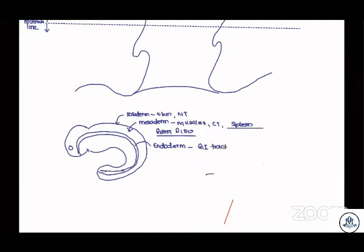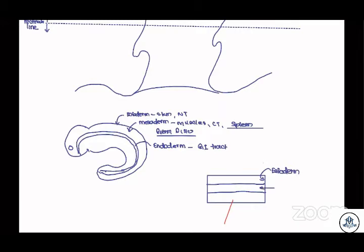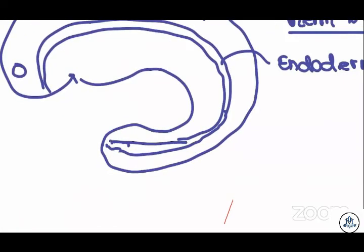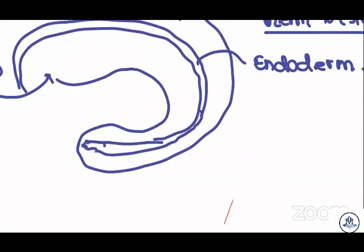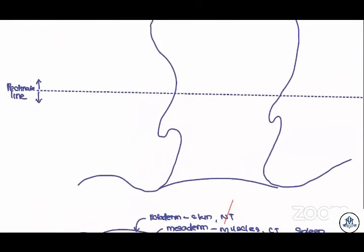There are three germ disks you will learn in embryology — ectoderm, mesoderm, and endoderm. The endoderm gives rise to the GI tract, but I did not complete the diagram at this end, because this section below is going to be from the ectoderm and the section above is from the endoderm.